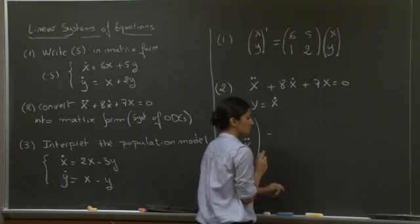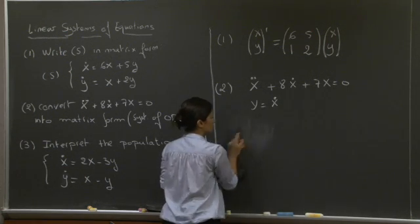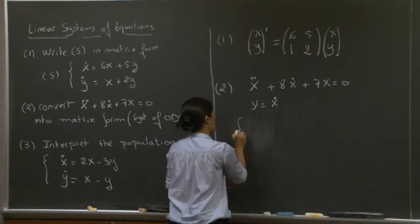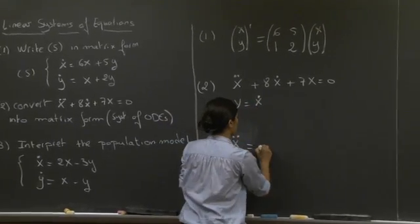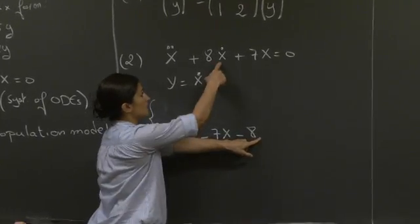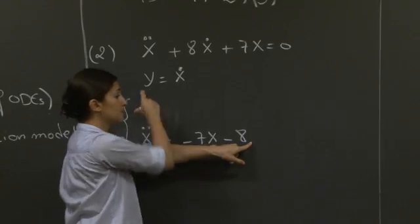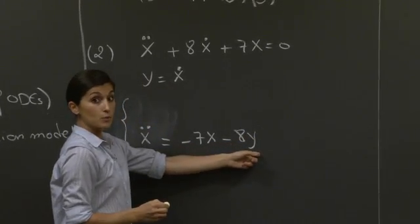Let me write it in a system first before I do it in vector form. We would write x dot dot equals minus 7x minus 8x dot. But we introduced a new variable, x dot equals y, so we have minus 7x minus 8y.